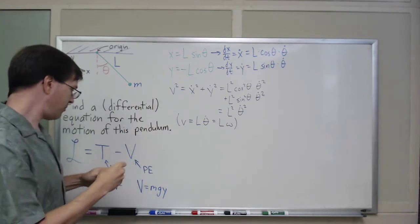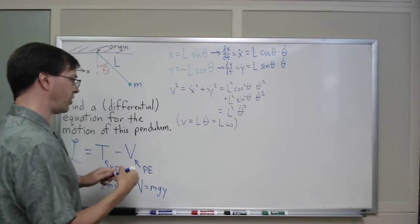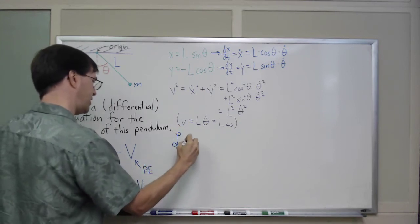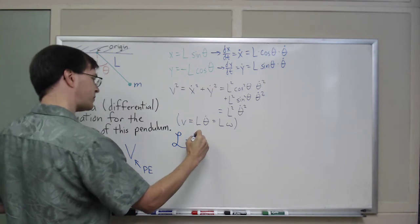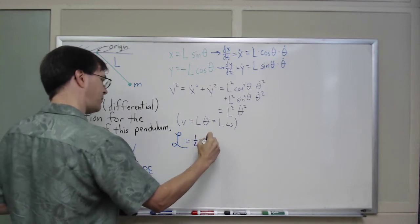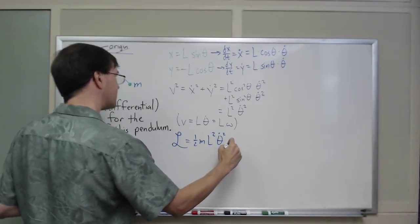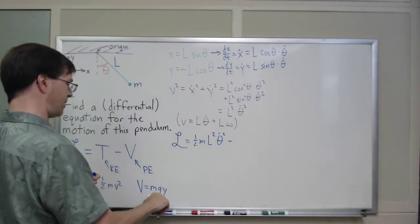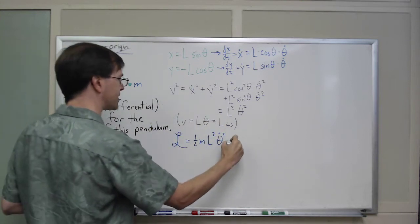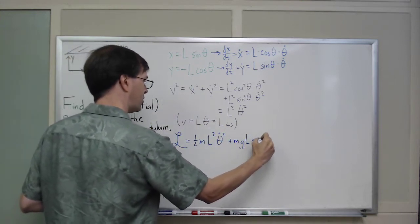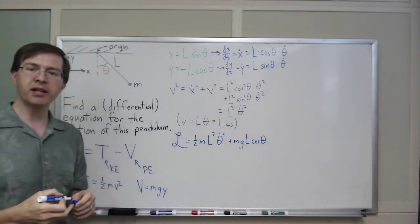Anyway, I've got this. I can write down my Lagrangian now. So, my Lagrangian, after all this, is going to be L equals one-half M L squared theta dot squared minus M G Y, but that means plus M G L cosine theta. That's my Lagrangian.